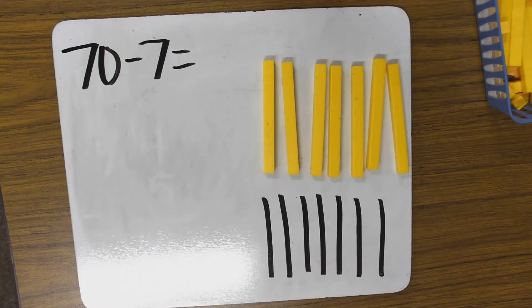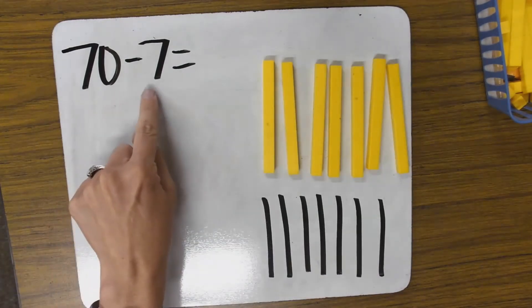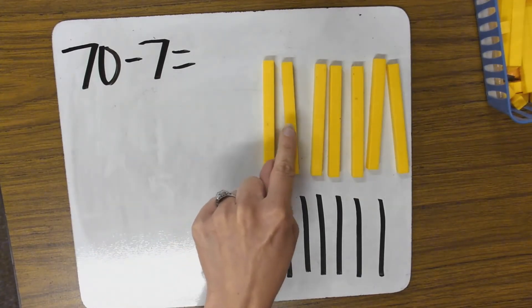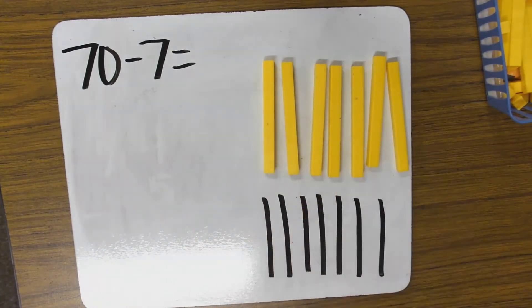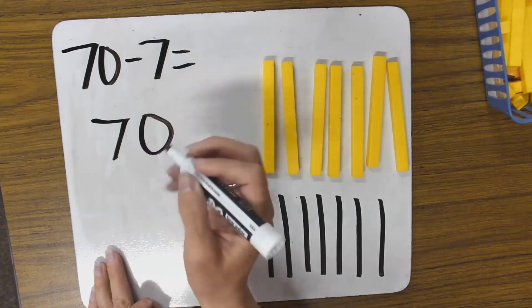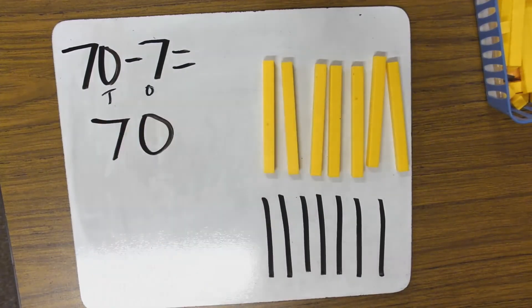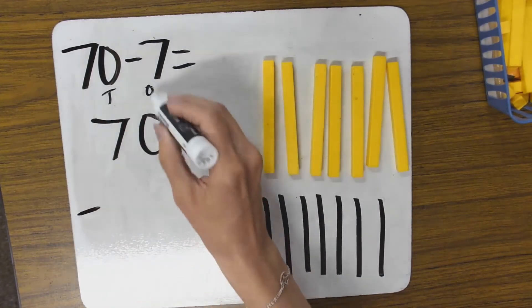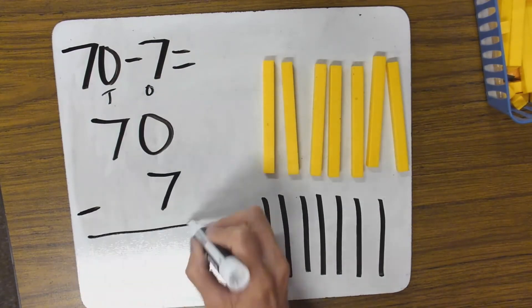Let's try another one. Go ahead and get set up with me here. We're going to do 70 minus 7. I have my 7 10s. So I have 70, my 10s and my 1s. And I'm going to take away 7. So those are 1s. I need to put them in the 1s place.